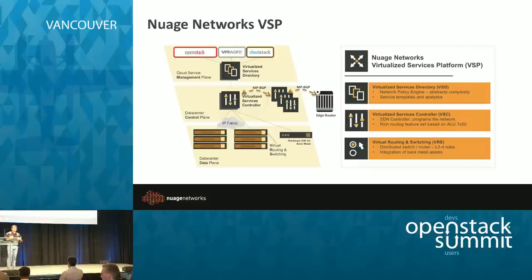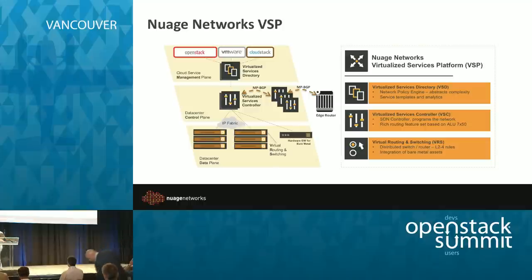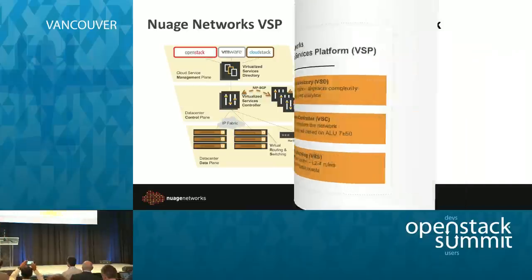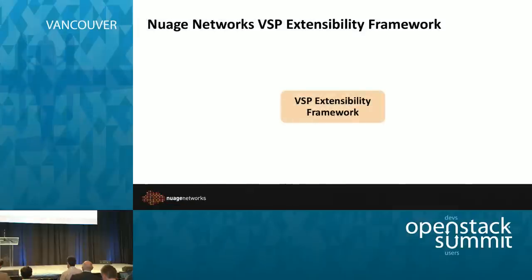We have an SDN controller that's been derived from a controller running on 40 of the top 40 service providers around the world. It's the same controller that Alcatel-Lucent uses in their carrier-grade routers, and we have virtualized it. We have a three-tier hierarchy with policy, control, and basically the routers and switches inside the hypervisors. These components have a lot of interfaces for bringing an ecosystem of partners together, and I want to give you the framework that we used for these reference architectures.